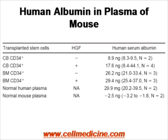Looking at the concentration of human albumin in the plasma of the mouse: mice which received cord blood CD34 cells have about 8 nanograms of human serum albumin in the plasma. Administration of hepatocyte growth factor after giving cord blood CD34s increases human serum albumin. Bone marrow-derived CD34s also produce human albumin in mouse plasma. Human plasma of course has a lot of human albumin, while normal mouse plasma without stem cells has none.